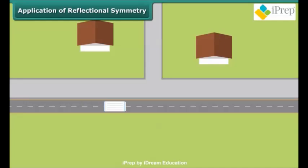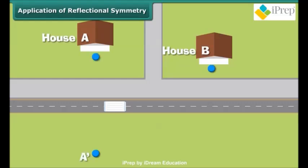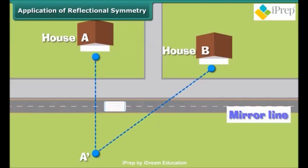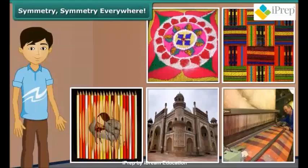Shama, a milkman, wants to park his van at some point on a street and distribute milk to houses A and B. Can you suggest where he should park so that his walking distance from the street to both houses is least? We can use reflectional symmetry here. Let A' be the image of A in the mirror line, which is the street. Join points A' and B — where this line meets the street is point P, the ideal place for Shama to park his van.